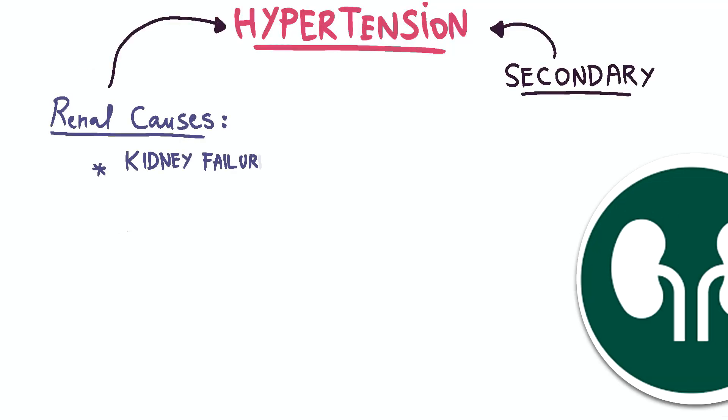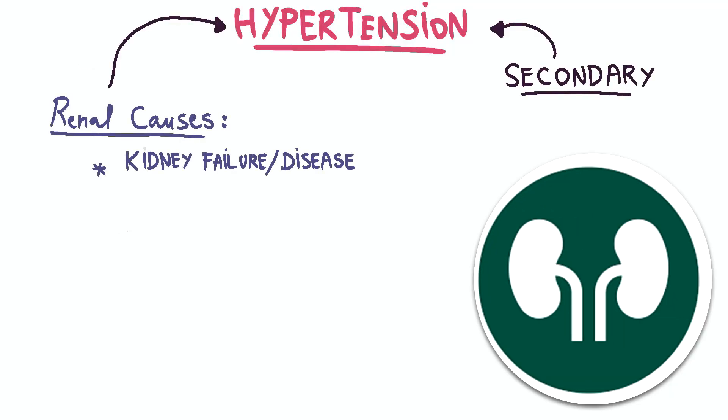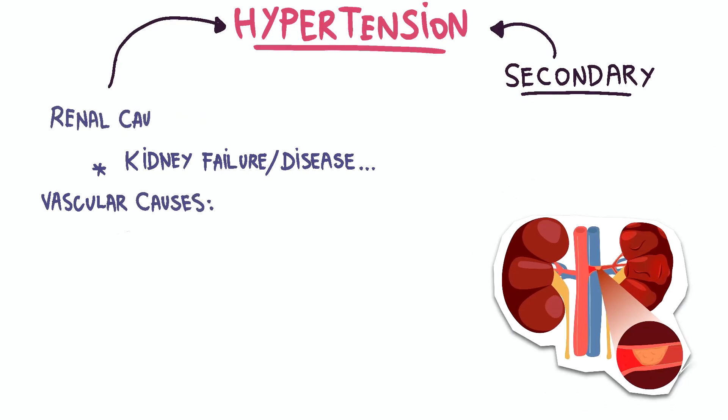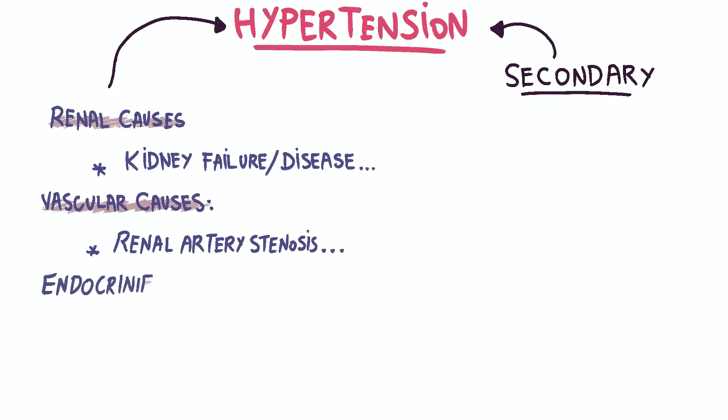Secondary hypertension can result from renal causes, such as chronic kidney disease or kidney failure, or from vascular causes, such as conditions that affect the blood vessels supplying the kidney, such as renal artery stenosis.